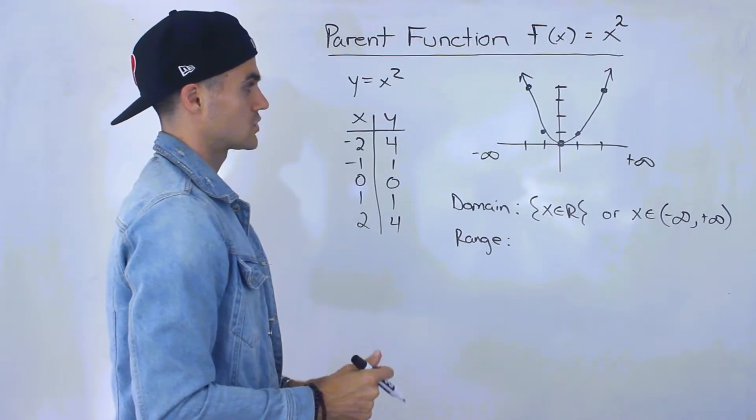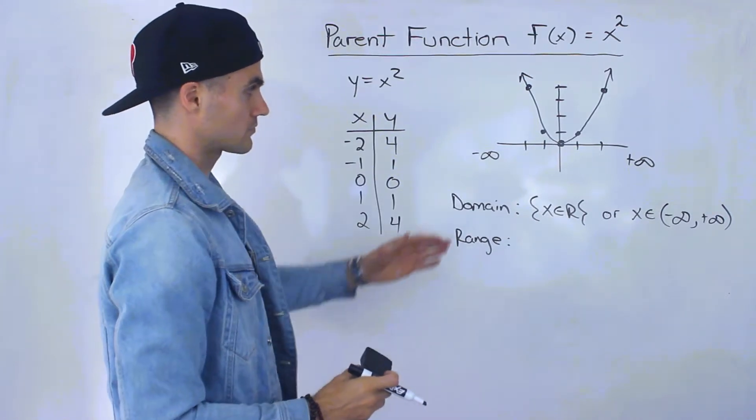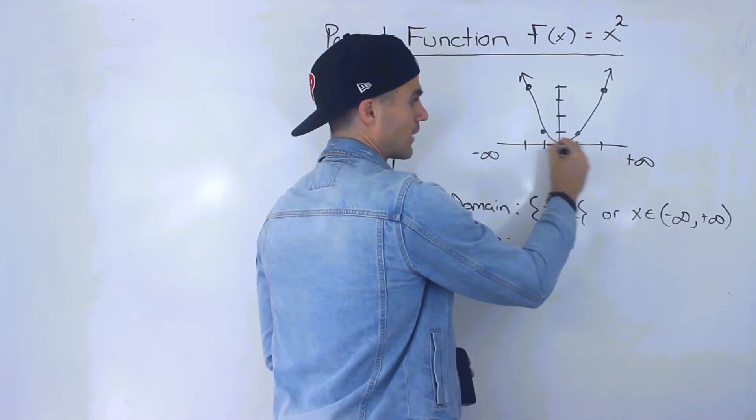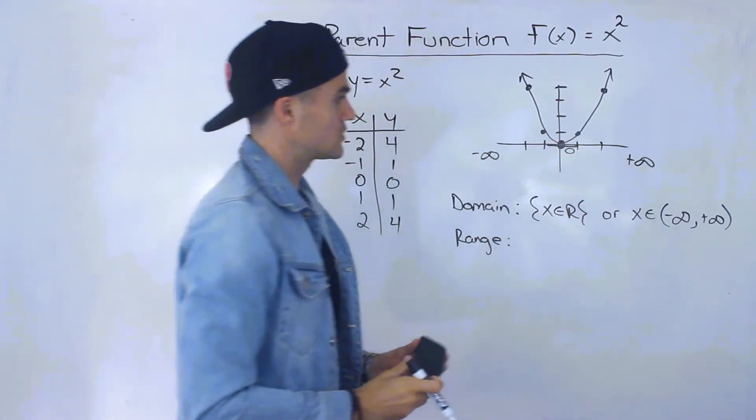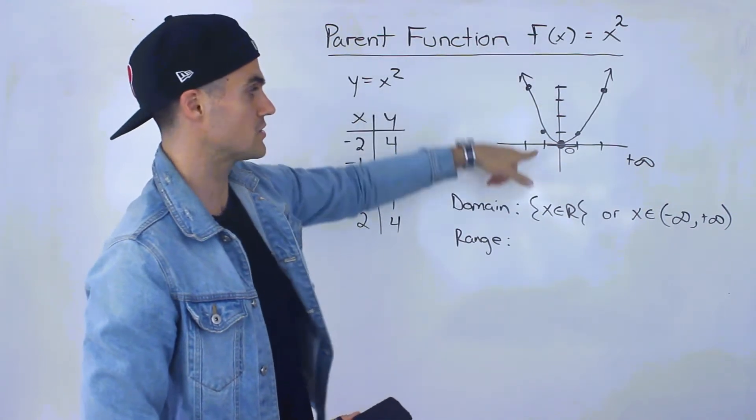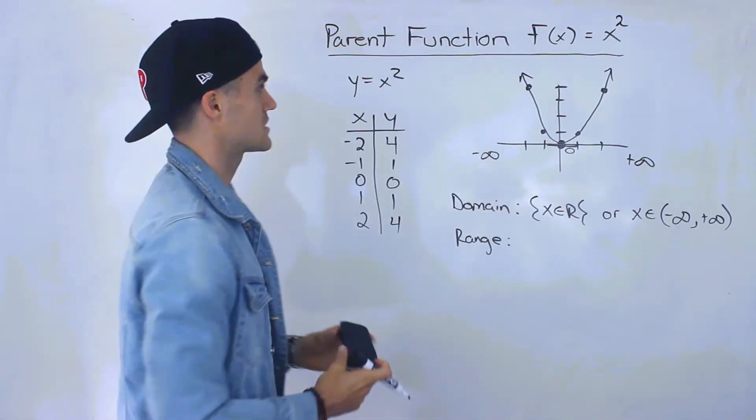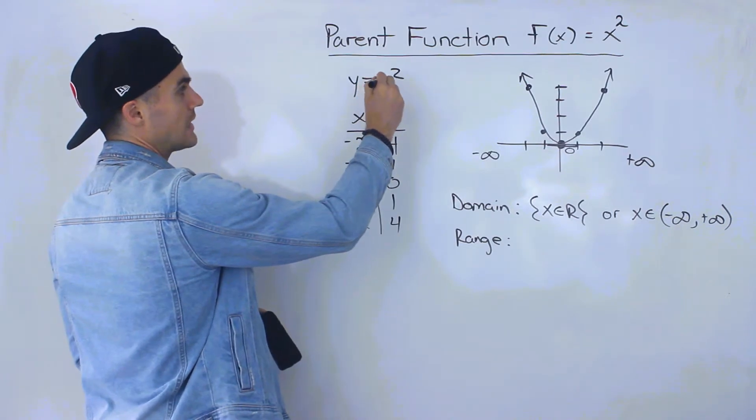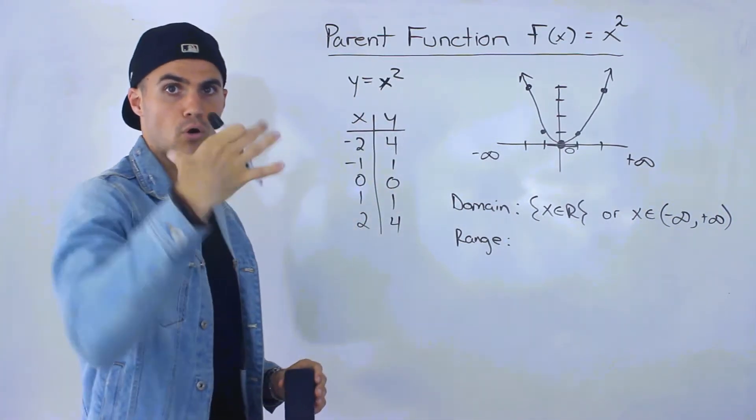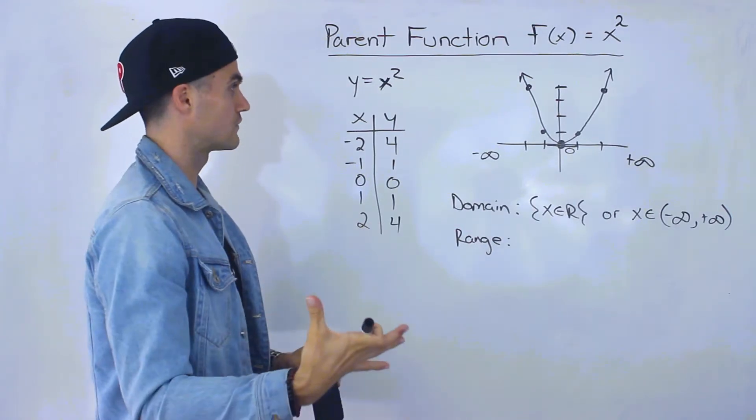Now, what about the range? Notice that all the y values—the minimum y value here is 0. All the y values are greater than or equal to 0. There can't be any negative y values, and that makes sense because any number to the power of 2 is always either 0 or positive. It can never be negative.